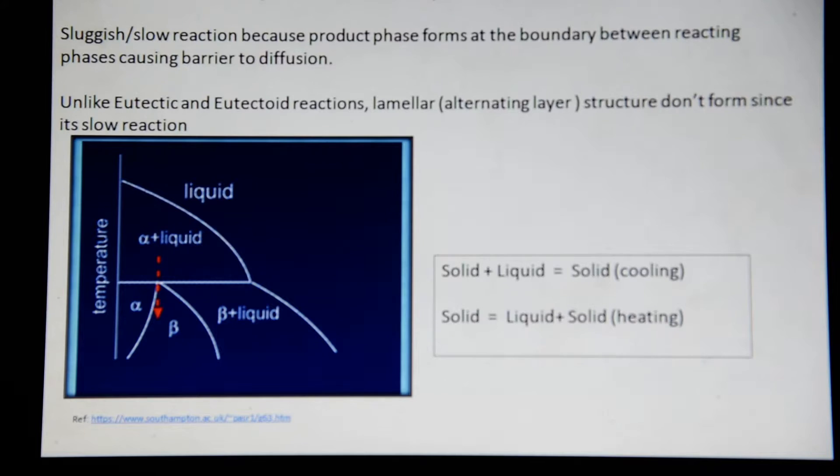You don't get a lamella or an alternating layer of atoms or alternating layers within the microstructure. This is because the peritectic transformations are quite slow.